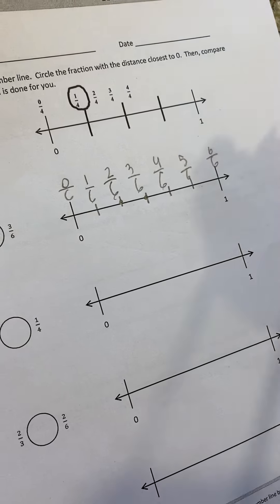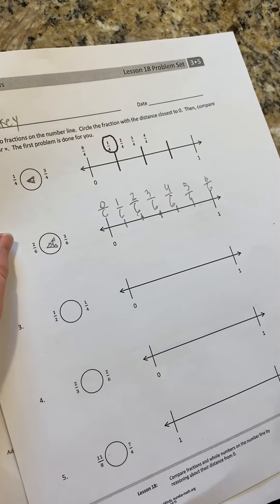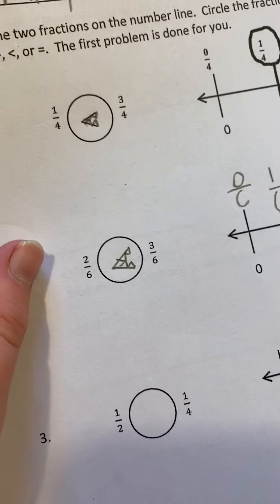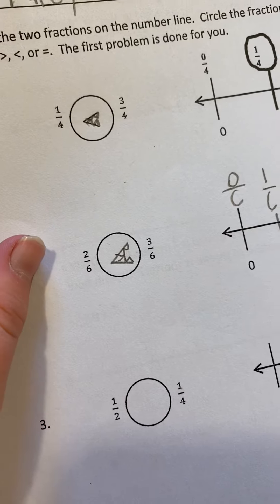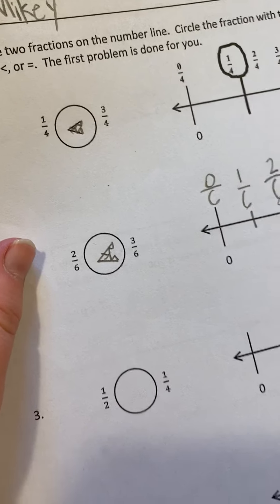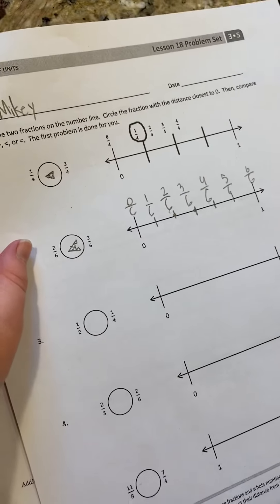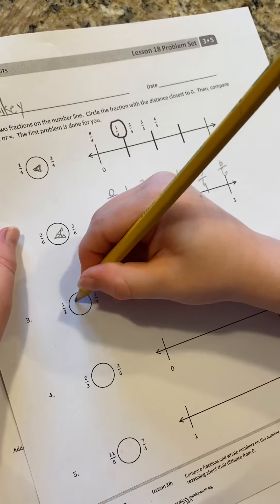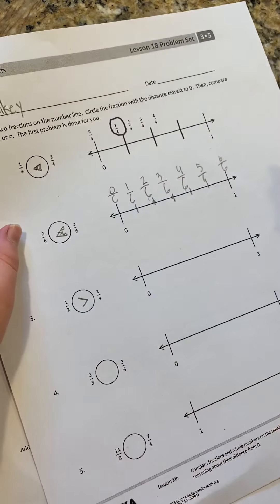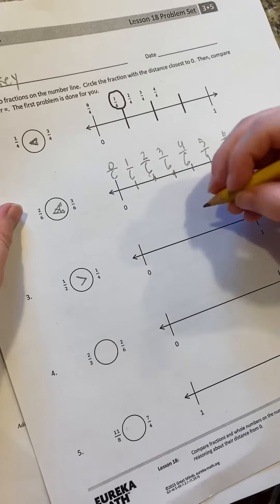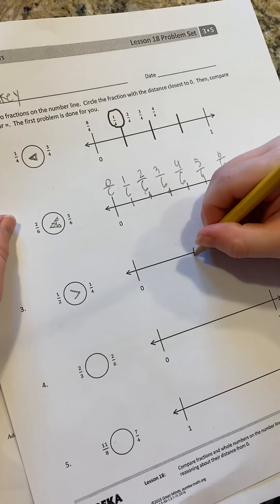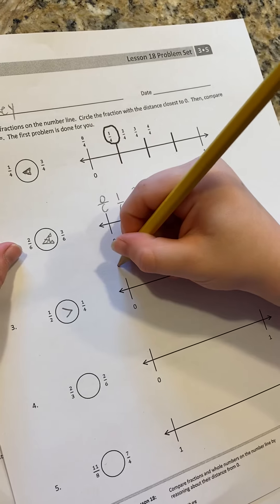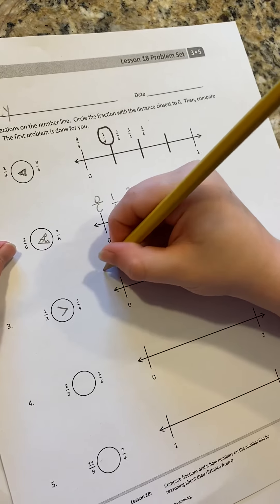Now, let's go ahead and put a plot point on two-sixths. Let's put a plot point on two-sixths and three-sixths, because those are the ones we're using. Now, which one is closer to zero? Two-sixths. That's right. So we know that our symbol here is going to look like this, because three-sixths is closer to one, and two-sixths is closer to zero. Okay? All right, let's do one more for everybody.